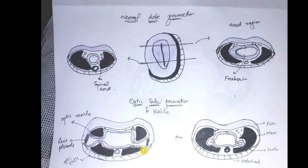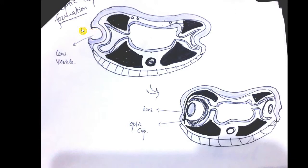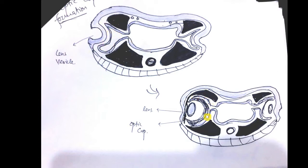Once the lens placode is formed, a pit appears in it due to invagination — this is called the lens pit. As the lens pit deepens it is called the lens vesicle, and finally when the two lips meet one another the lens is formed, which then matures into the mature lens. At the same time, the optic vesicle also invaginates and forms the optic cup.